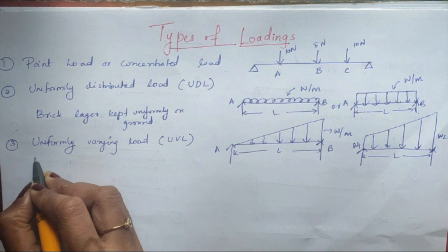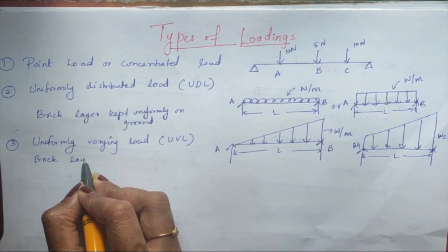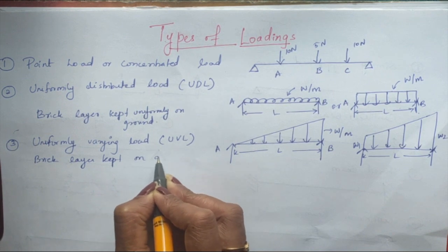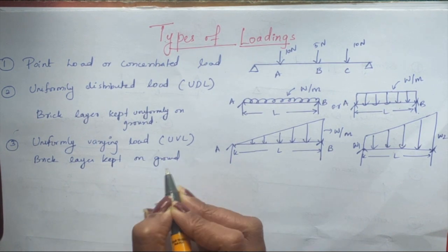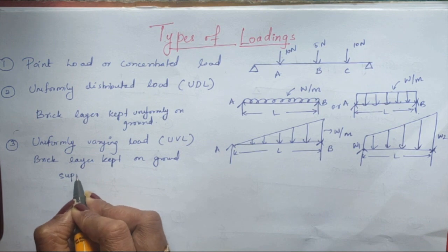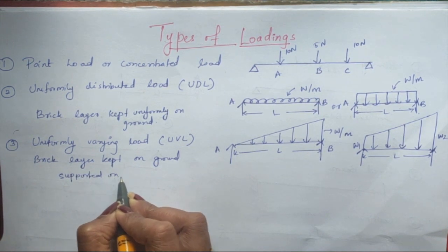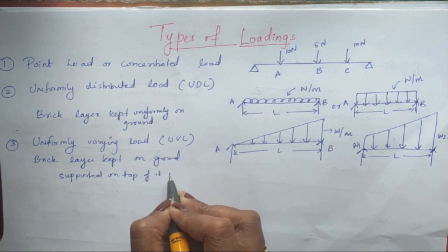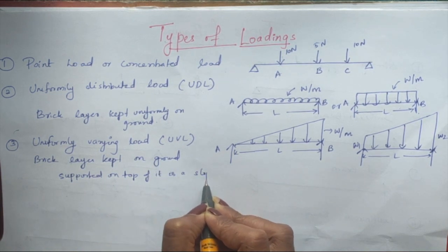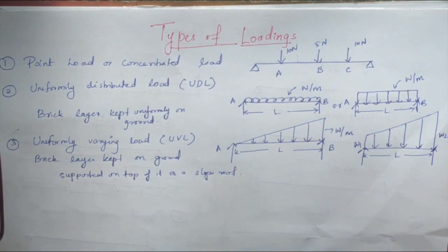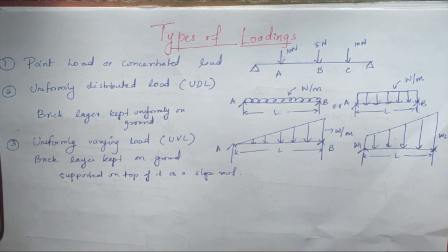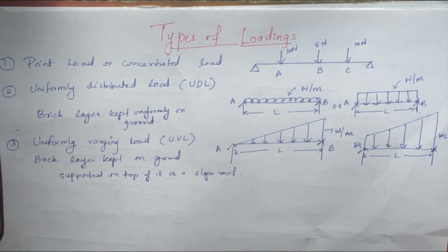An example of UVL is a brick layer kept on a ground surface with a sloping roof supported on top. You place uniform brick layers and over that you keep a sloping roof — that gives a uniformly varying load. These are the types of loadings you should know.